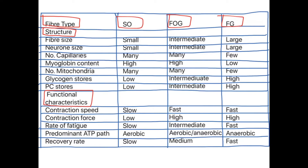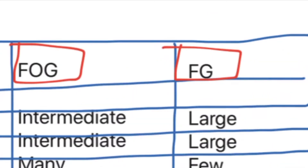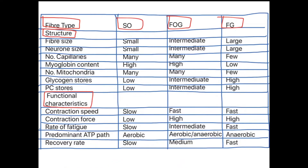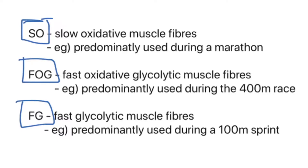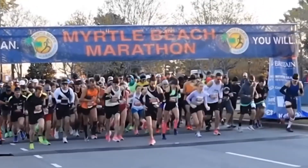Before we get into this slide, you'll see at the top I've got SO, FOG, and FG. Those are the muscle fibre types, but they're not recognised shorthands in the exam, so write these in your notes as it makes things a lot quicker. SO stands for slow oxidative muscle fibres. These are the small ones - they produce a low force contraction over a long period of time aerobically, and are predominantly used in sports such as a marathon.